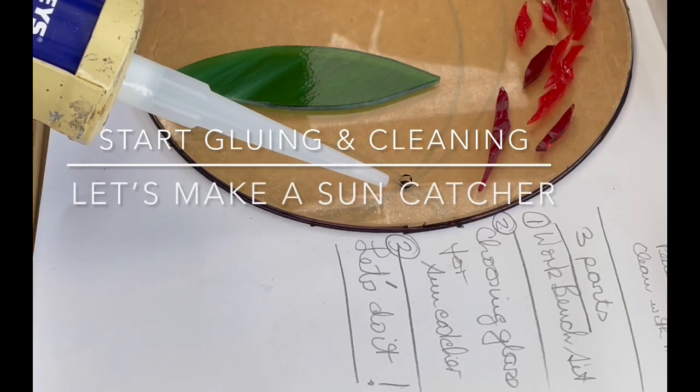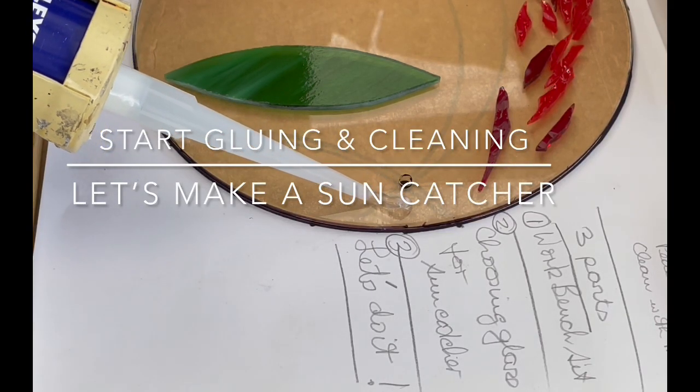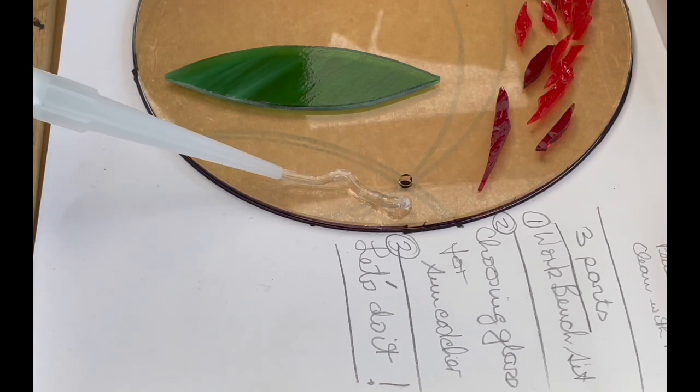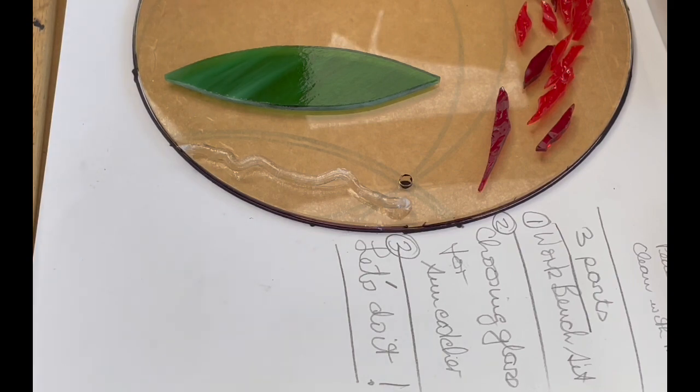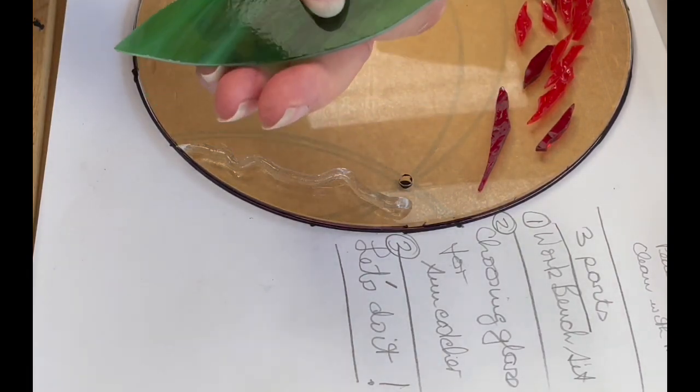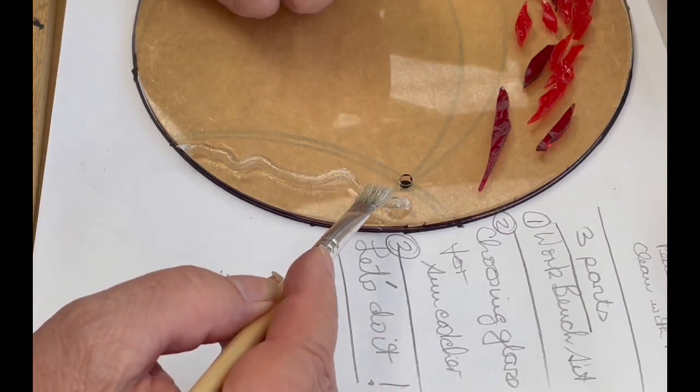I'm just going to squeeze a wriggly worm down here, down the glass, and I don't mind if I have to scrape excess off. I'd rather scrape excess off than have air bubbles and all of that sort of thing.